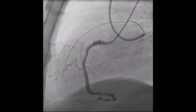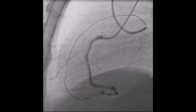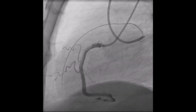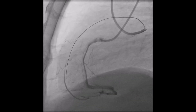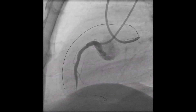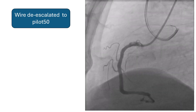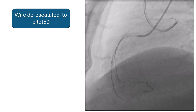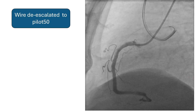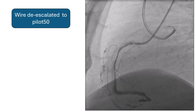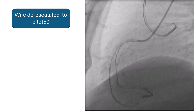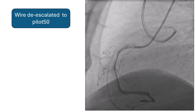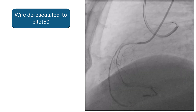And here comes another benefit of dual injection — the wire was actually in the wrong place. What we did at this point is that we de-escalated the wire to Pilot 50, and we were able to navigate the tortuosity in the lesion and in the track that was created by the previous wire, and so entered the true lumen.